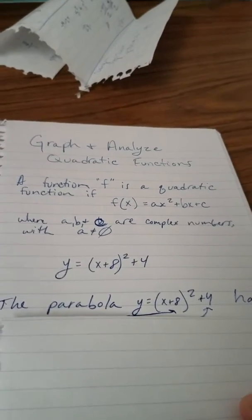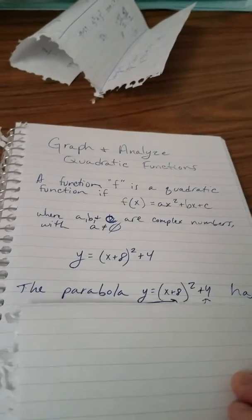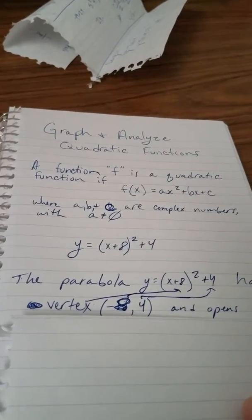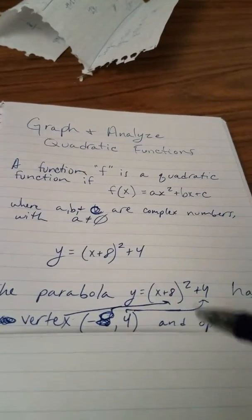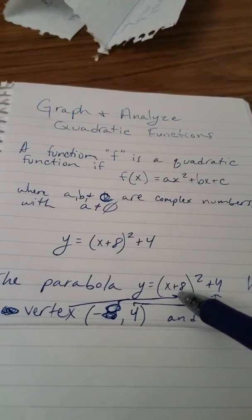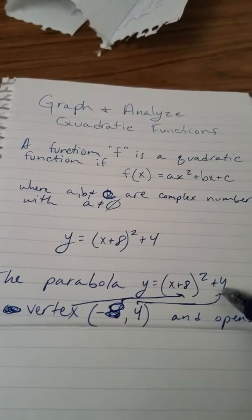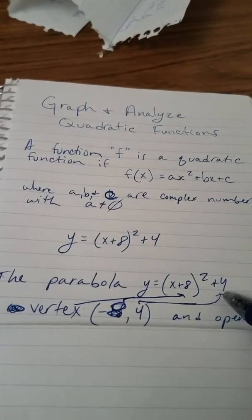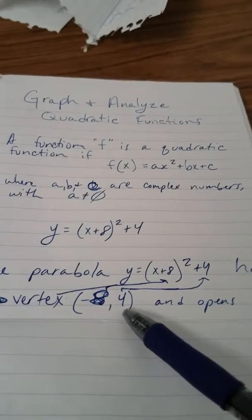The parabola y equals x plus 8 squared plus 4 has a vertex of negative 8 and 4. And I found that because you find the opposite of this number, which is negative 8, and this number is the other coordinate, which is 4, which gives you the vertex, negative 8 and 4.